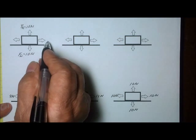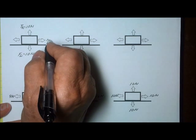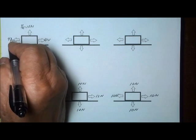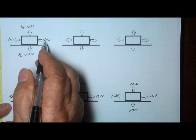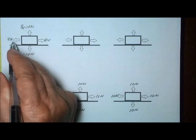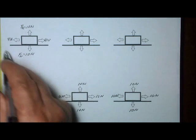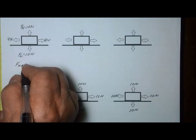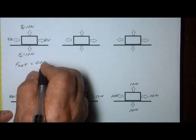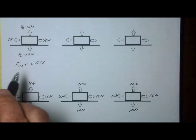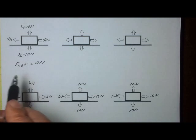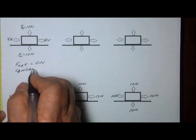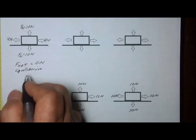Now we're going to pull on this box to the right with a force of 4 newtons, and also pull on it to the left with a force of 4 newtons. These are equal in magnitude and opposite in direction, so they cancel each other out. The total net force acting on this box is equal to zero newtons, meaning the box is in equilibrium.